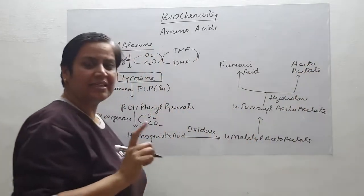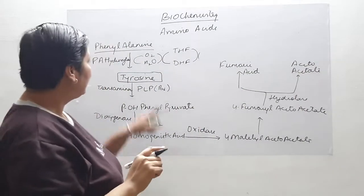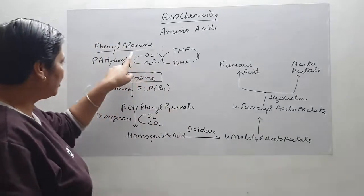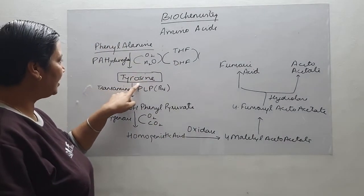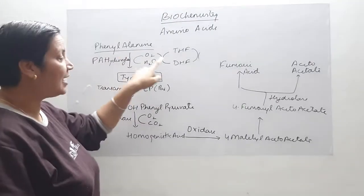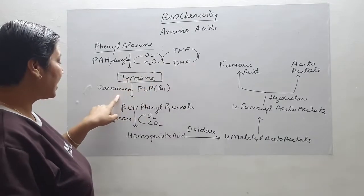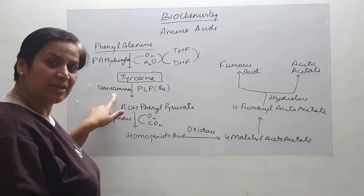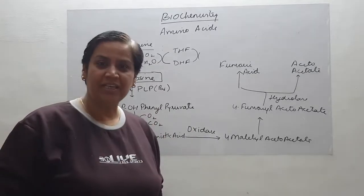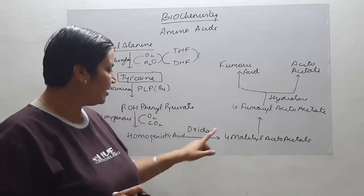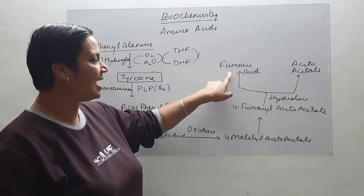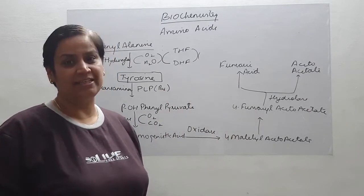This is the catabolism of phenylalanine, an essential amino acid. The first reaction is formation of tyrosine by hydroxylation requiring molecular oxygen and dihydrobiopterin reductase. Second, tyrosine undergoes transamination forming para-hydroxyphenyl pyruvate, which undergoes dioxygenase action forming homogentisic acid, then 4-maleylacetoacetate, 4-fumarylacetoacetate, which splits to form fumaric acid and acetoacetate.